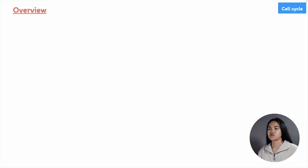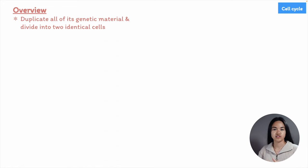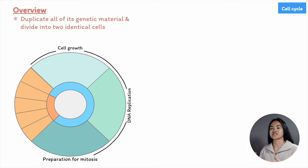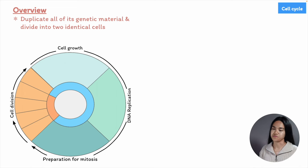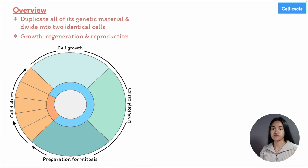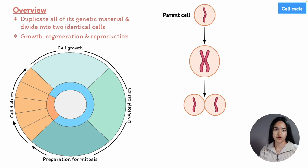The cell cycle is the process a cell undertakes to duplicate all of its genetic material and divide into two identical cells. It's an ordered sequence of events — a cycle of duplication and division occurring in the cell. It's essential for growth, regeneration, and reproduction. For example, a prokaryotic cell that splits is actually reproducing, since a new organism is produced as a result of the process.